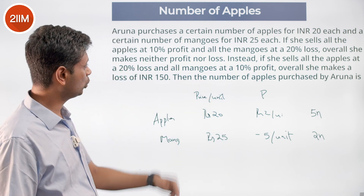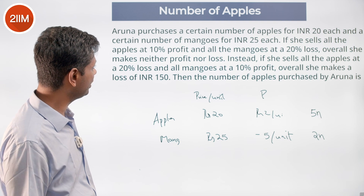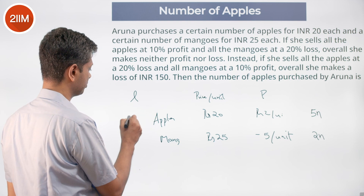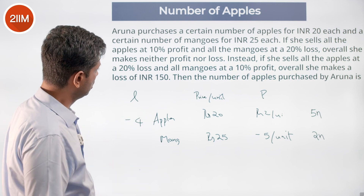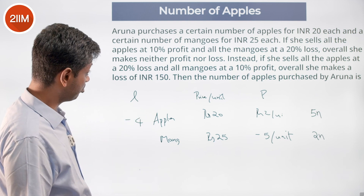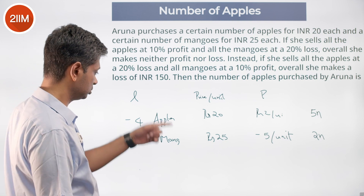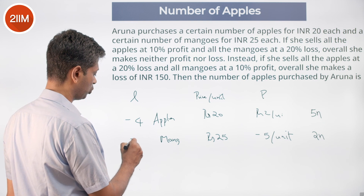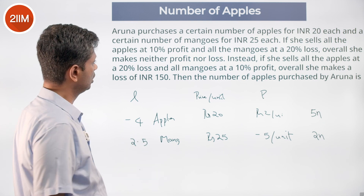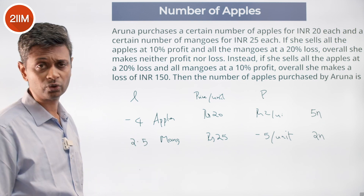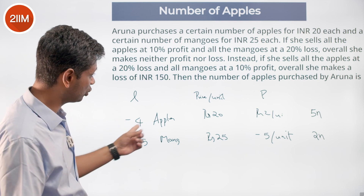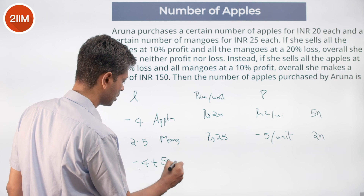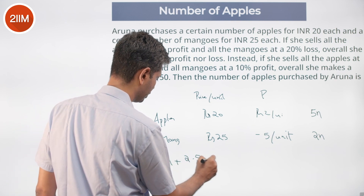Now in the new scenario, instead she sells all the apples at a 20% loss — that's a loss of ₹4 per apple — and all the mangoes at a 10% profit — that's ₹2.5 profit per mango. Overall, she makes a total loss of ₹150. So: (−4 × 5n) + (2.5 × 2n) = −150.